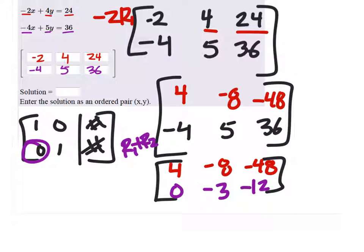Well, I also want a 1 where this negative 3 is. I want a 1 right there. So I can get a 1 pretty quick by just taking row 2 and dividing it by negative 3. Because negative 3 divided by negative 3 is 1. The great thing about this is it's not going to affect that x column because it's already a 0 in that row.